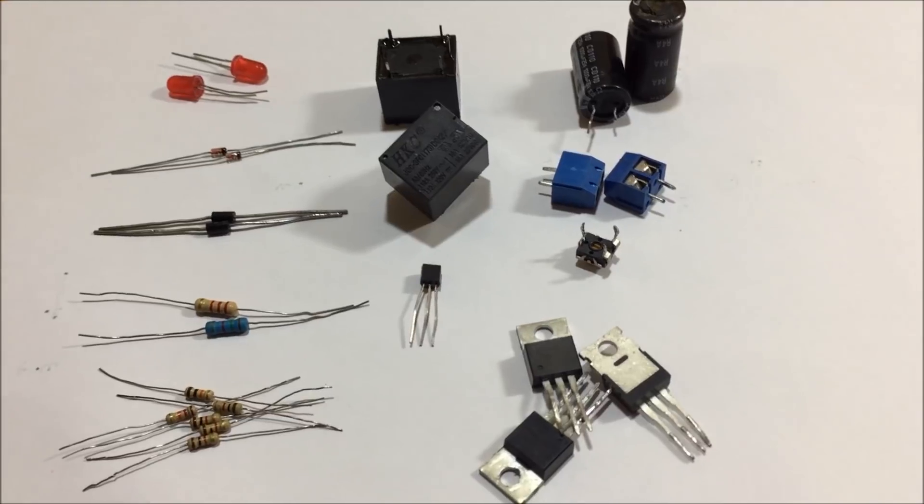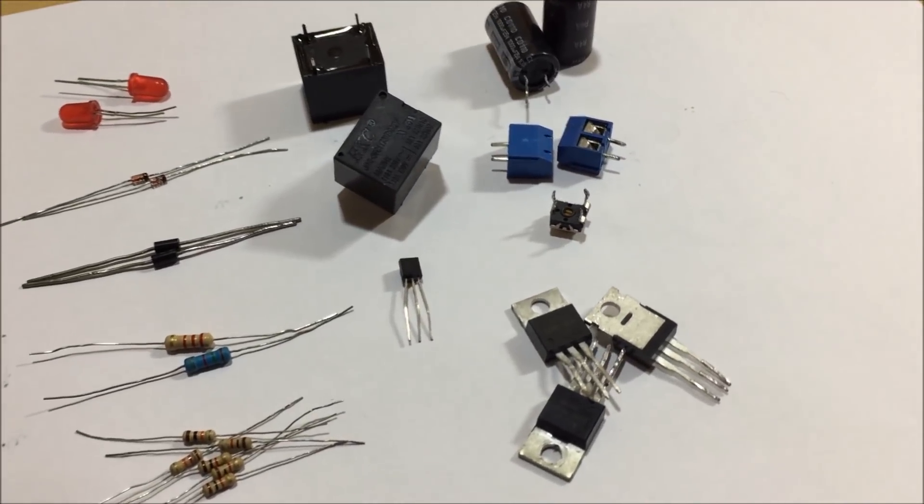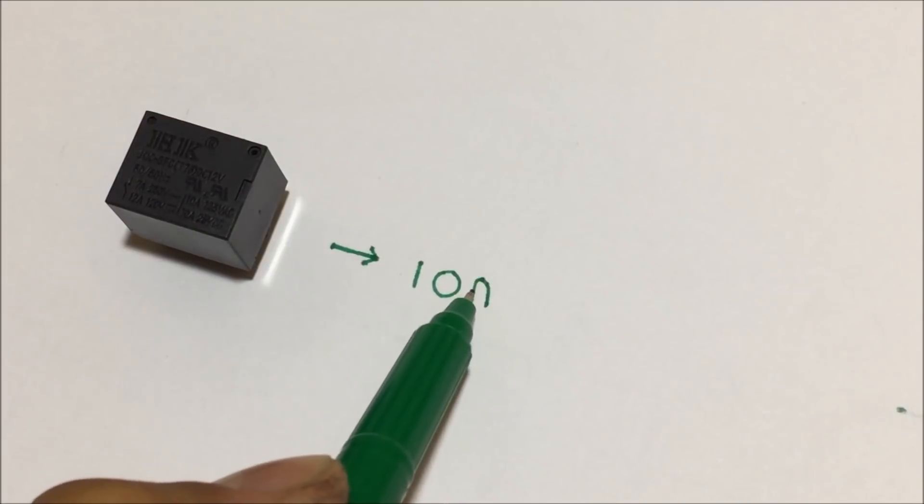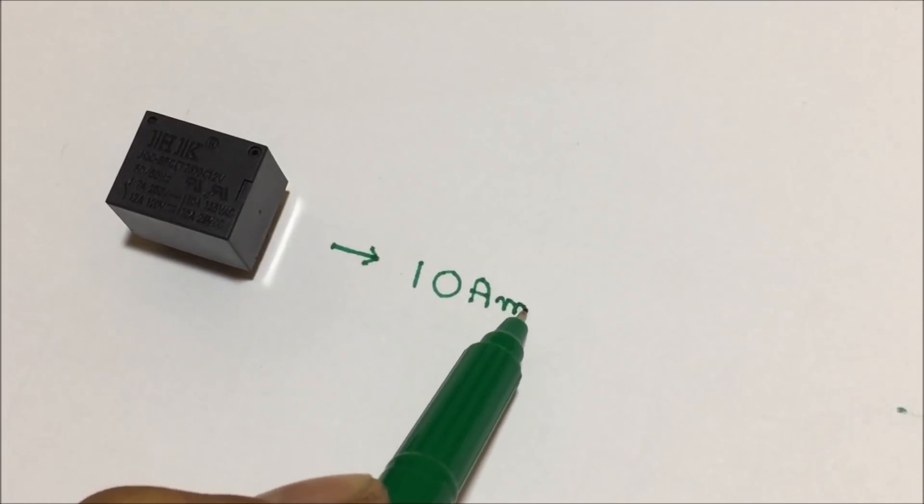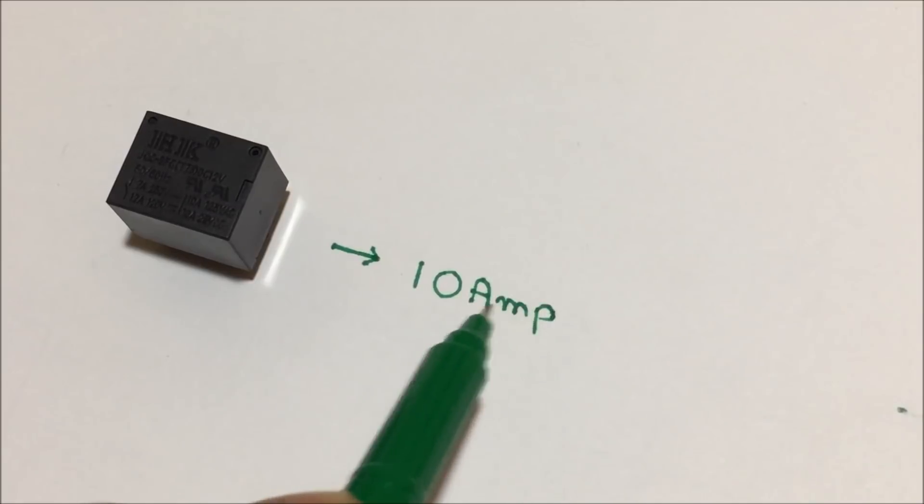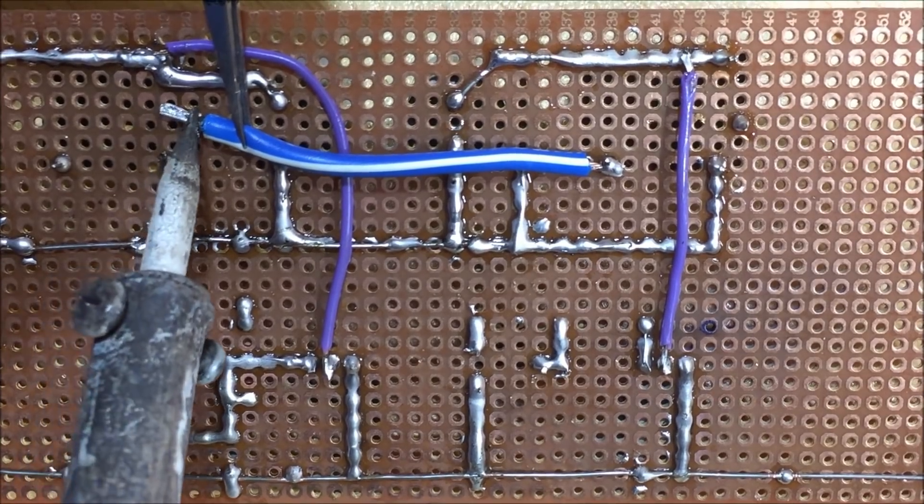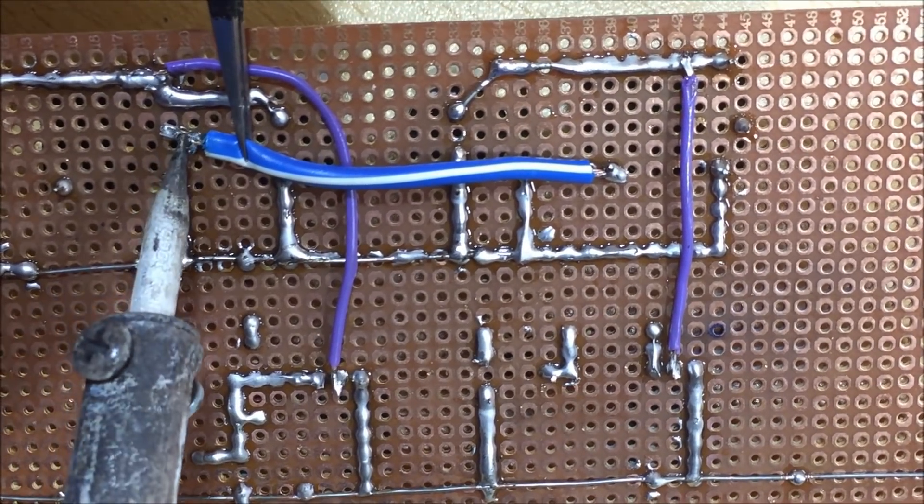Now, let's gather all the required components and build a more permanent version on a perfboard. This circuit can only handle current up to 10A, but you can upgrade it by using a relay which can endure more current. If you want to build something similar, you can get the part list and circuit diagram in the video description.